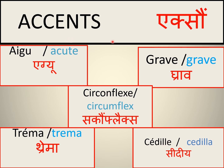There are five accents or 'exo' in French. First is exo aigu — in English, the acute accent. Second is exo grave — in English, the grave accent. Third is the circumflex. Fourth is tréma — in English, the trema. Fifth is the cédille — in French 'exo cédille,' in English the cédille accent.